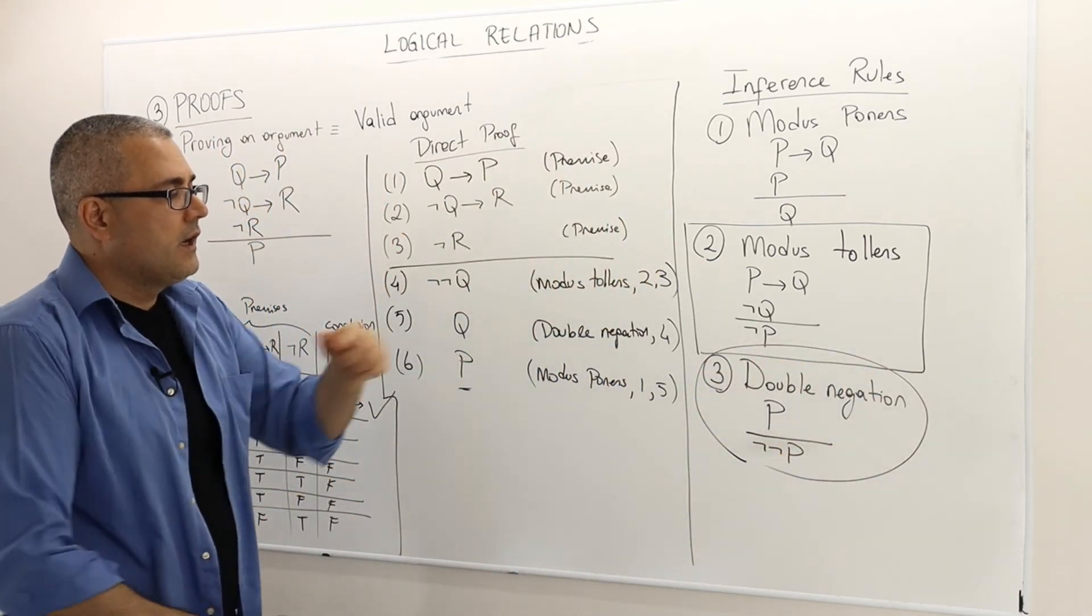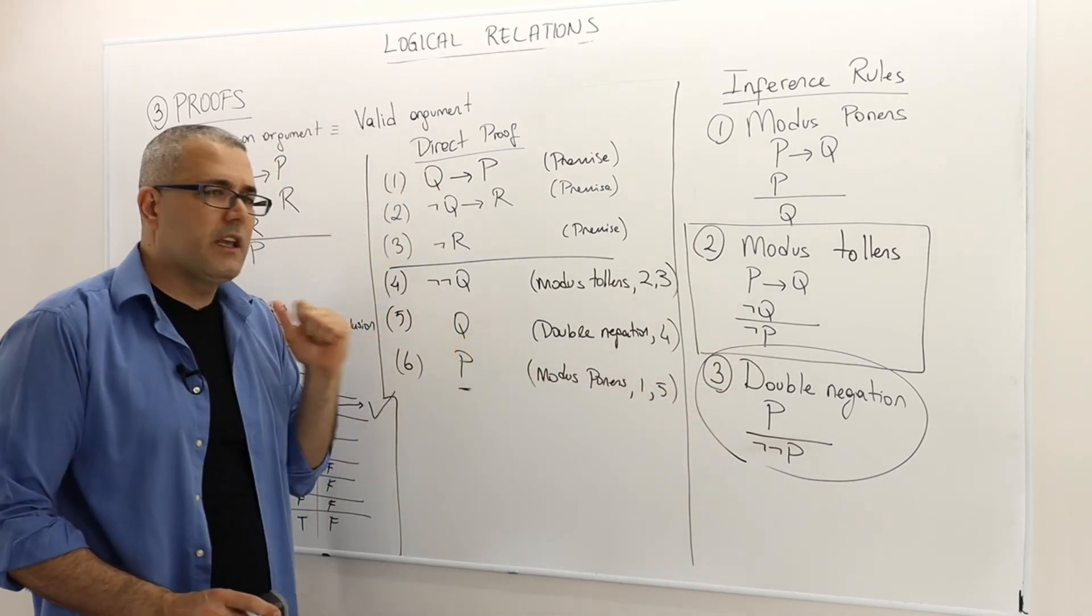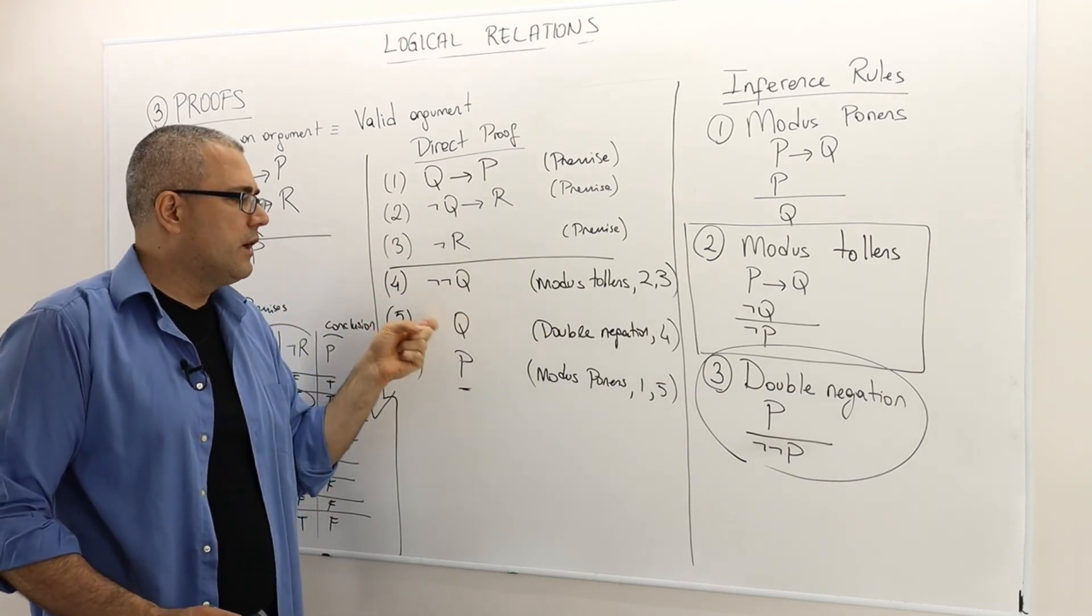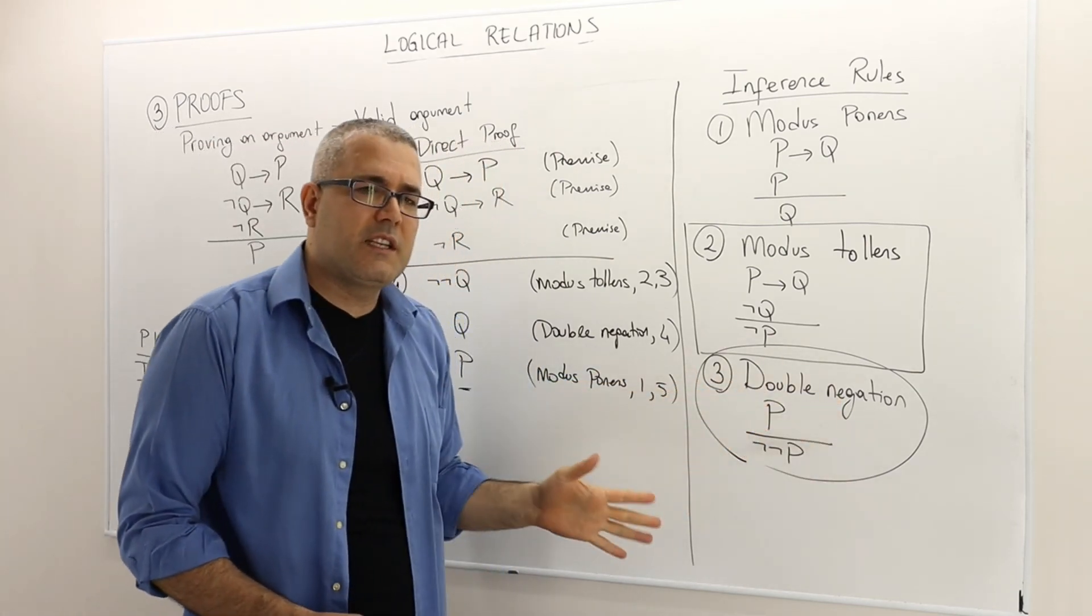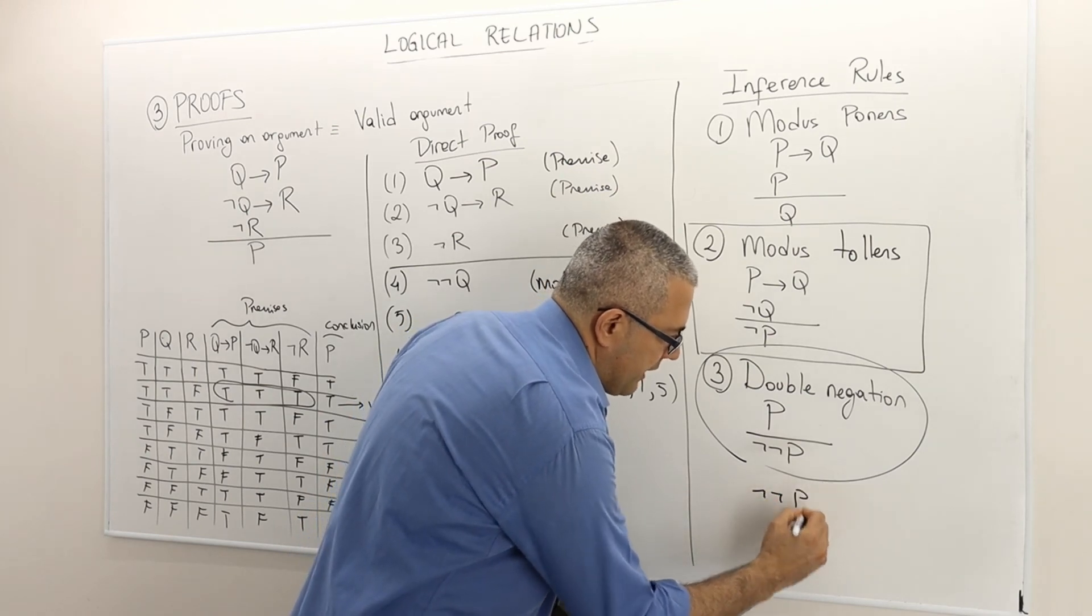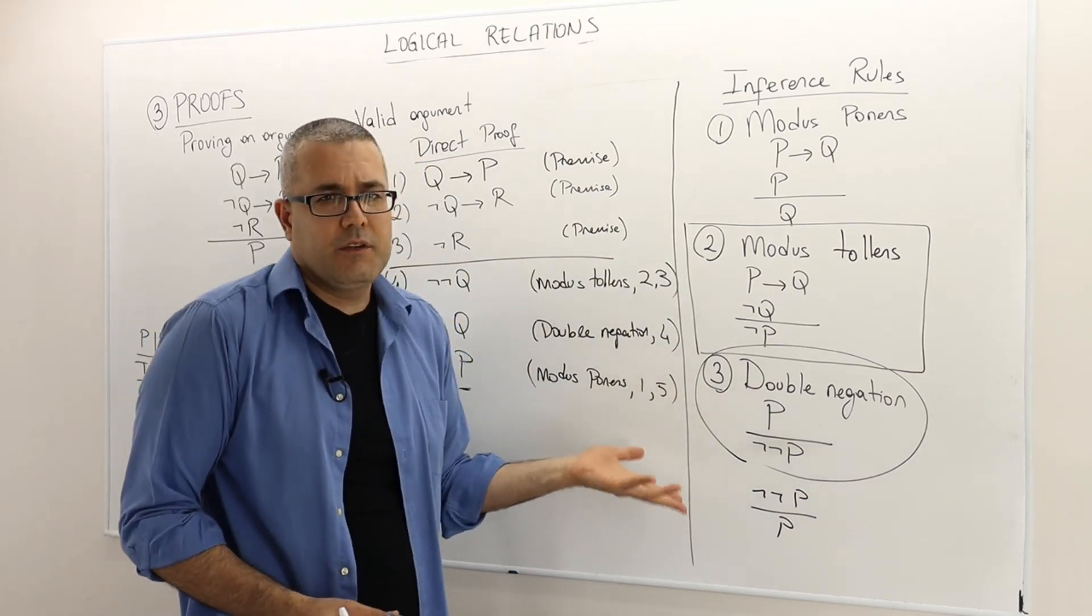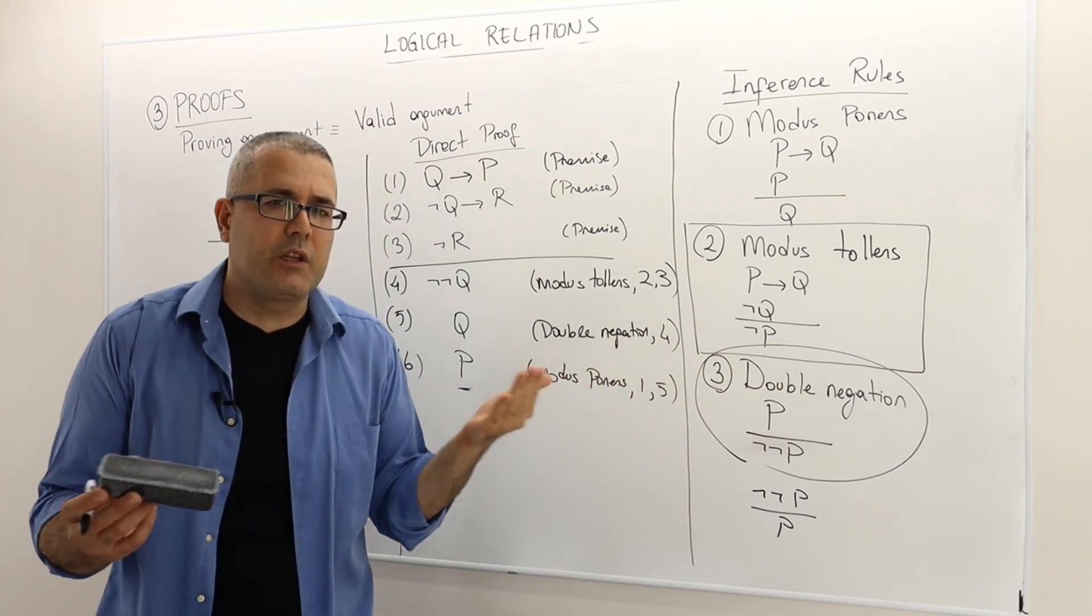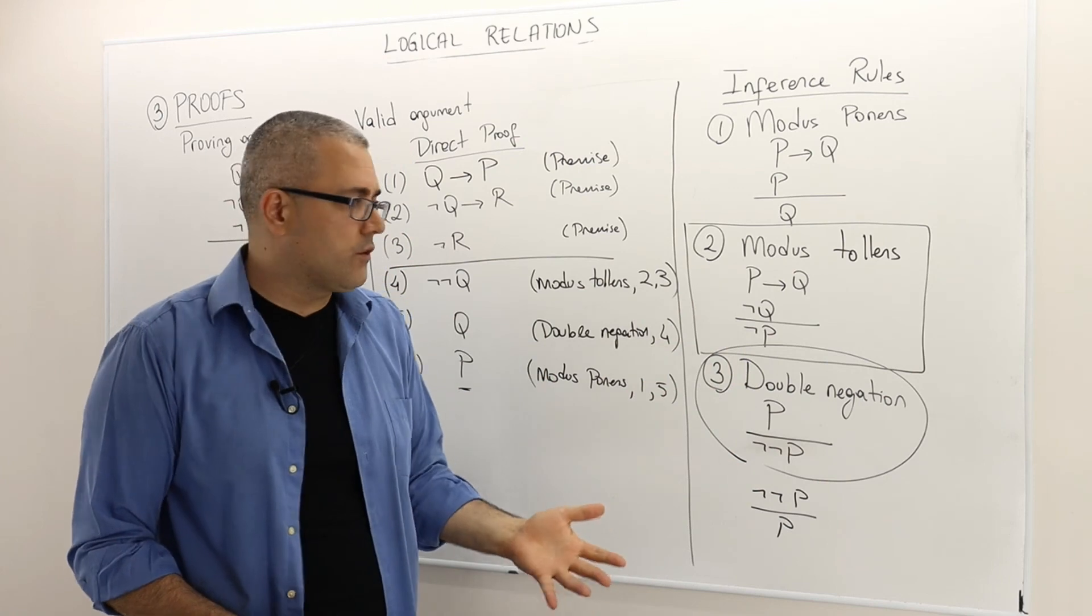So here is maybe one thing that I should underline, this double negation rule. It says if P then not not P, but here I used sort of the opposite. If not not Q implies Q, or equivalently. So let's use the same letters here. Can I say not not P implies P? Well, yes. So that's also double negation. Because P and not not P are actually equivalent. So if this rule is correct, and this rule is also correct.